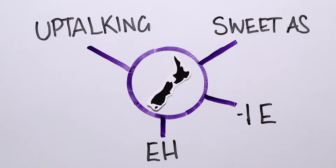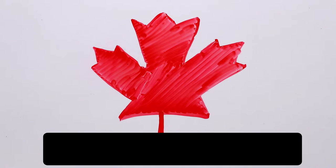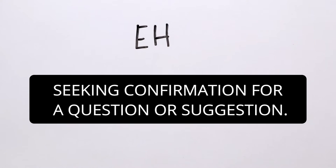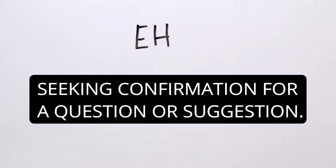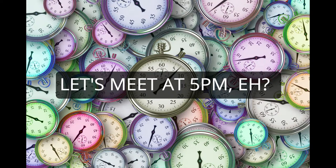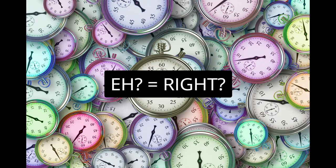Number four is the little word eh. This word comes up quite a bit in New Zealand. Eh is also used in Canada, but in different situations. Here are some examples of when you will hear eh in Kiwi English. Seeking confirmation for a question or suggestion. You're going to the movies, eh? Let's meet at 5pm, eh? In this situation, eh means right.